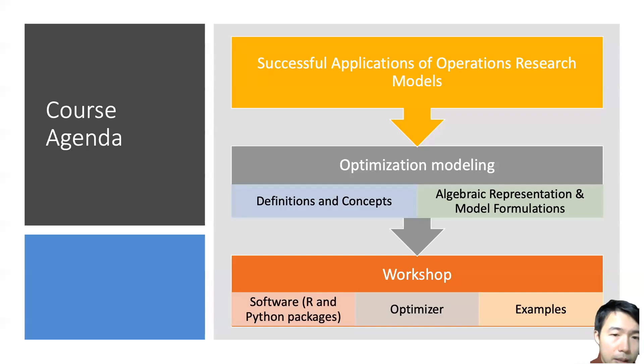The course agenda: first, I'd like to show you some successful applications of operations research models. Then we're going to talk about optimization modeling, some definitions and concepts, followed by algebraic representation and model formulations. Then we're going to talk about how to use R and Python packages to do the modeling, what is an optimizer or solver, and I'll give you some examples in the end.